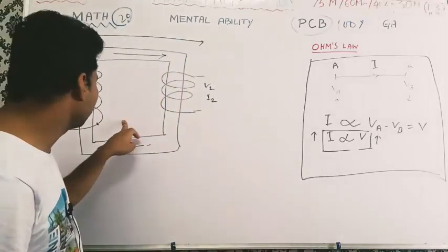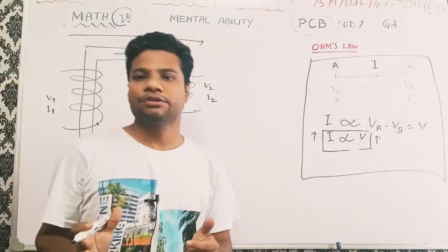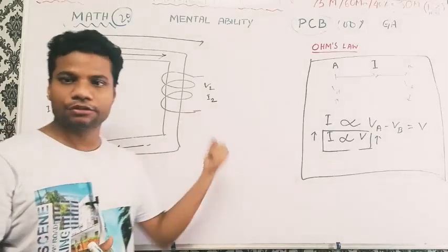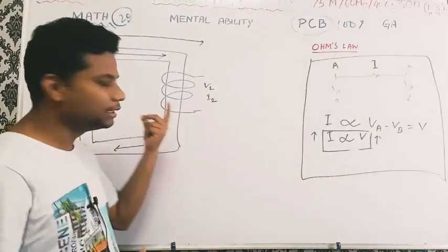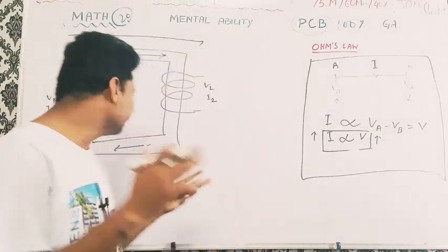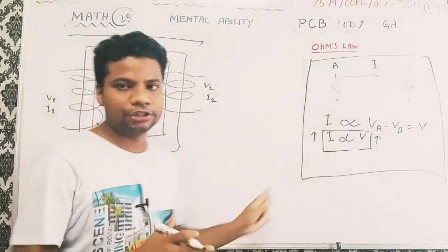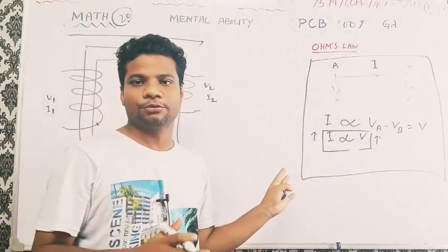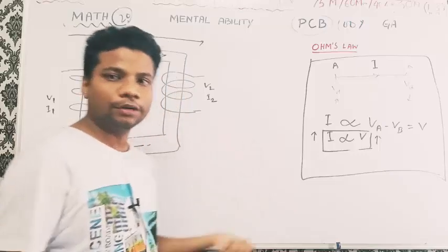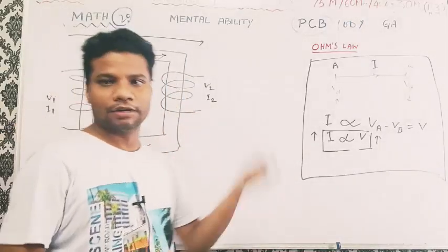This is the transformer and the principle of how to use it. It is not step down — the voltage is low. If it is high voltage, we can use the domestic voltage, then we can use the step down. We can use it for industrial purposes and for transmission.